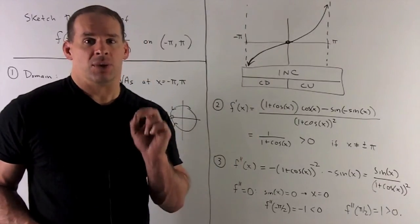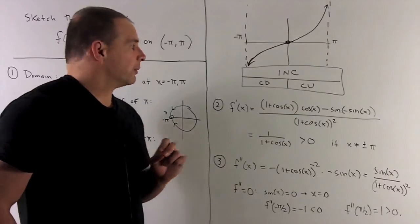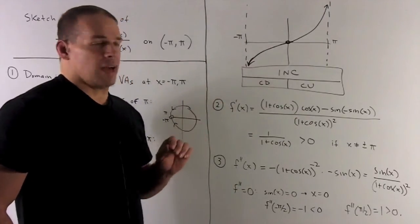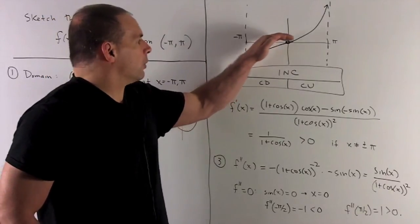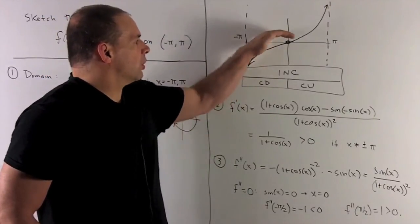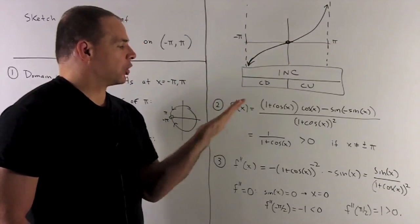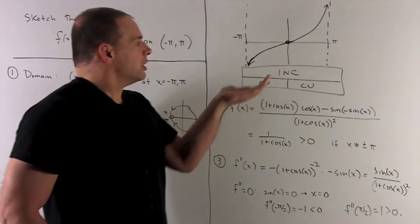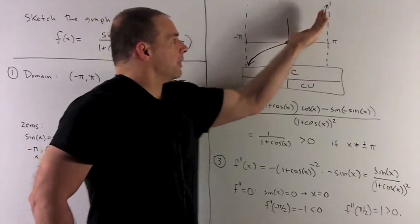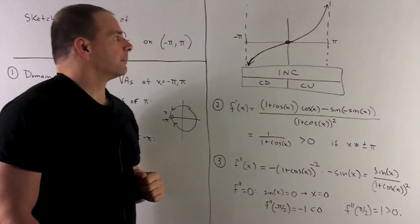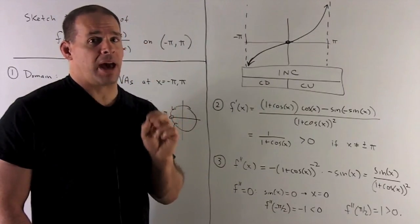Now we connect the dots. On the left region, the function is increasing and concave down — it comes down from the asymptote at minus pi and passes through the zero at x = 0 with that shape. On the right region, it's increasing and concave up — from x = 0 it curves upward to the asymptote at pi. That's what the function looks like on minus pi to pi.